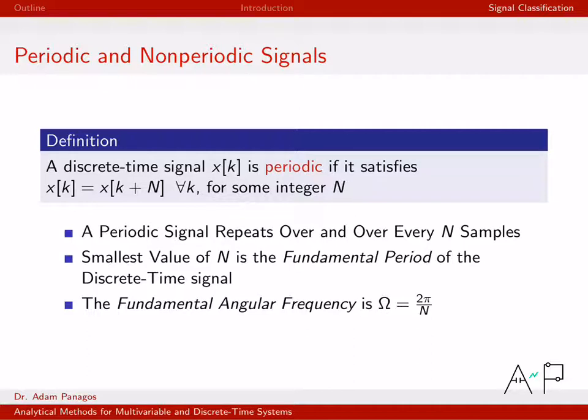Another way of thinking about a periodic signal is in terms of its fundamental frequency. So the relationship between capital omega, the fundamental frequency of the signal, and n, the period of the signal, are related by this simple equation right here.